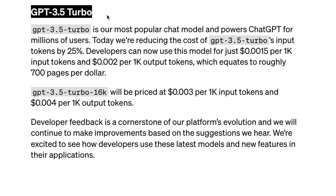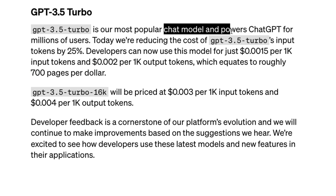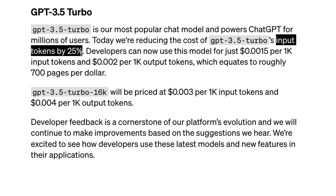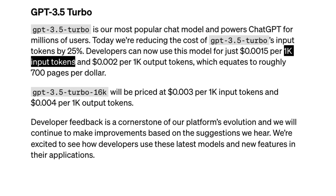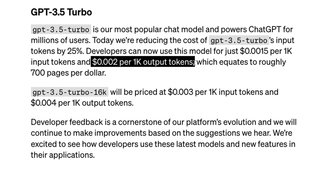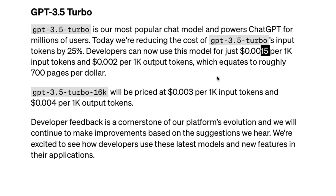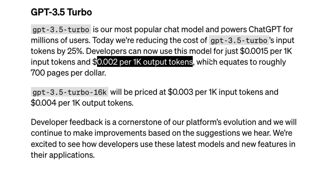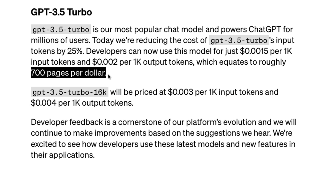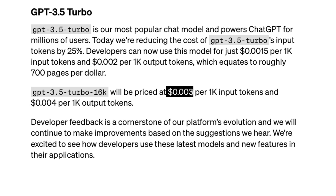Now for the cheaper part. For GPT-3.5 Turbo, the standard text generation model, the input token rate has been reduced by 25 percent. You now pay $1.50 per 1 million input tokens and $2 per 1 million output tokens. According to OpenAI, this equates to approximately 700 pages per dollar — absolutely competitive pricing. The GPT-3.5 Turbo 16k is priced at $3 per 1 million input tokens and $4 per 1 million output tokens.